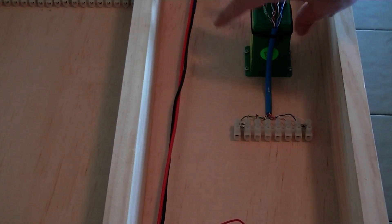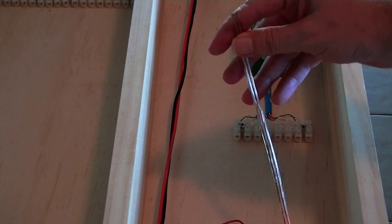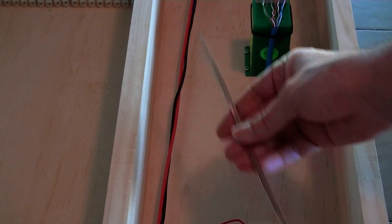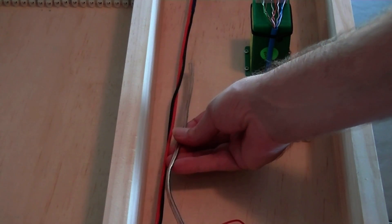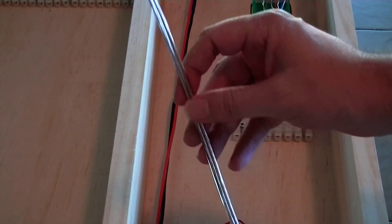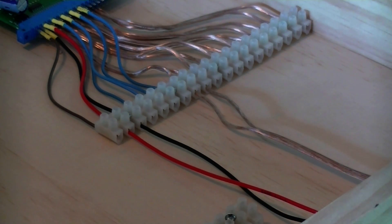Time to wire up the Tortoise machines now. What I'm going to be using is speaker wire, this is probably about 18 gauge. The reason why I chose the speaker wire is because one, it's very cheap, and the other is it's complete contrast to the other wiring on the layout so it's very clear that this is for the switch machines.